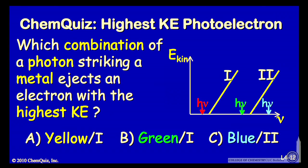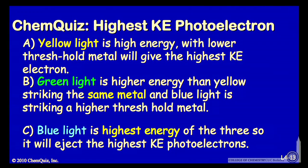What is the highest kinetic energy? Let's consider an argument for each of the three answers. Yellow light is high energy with a lower threshold metal, so it'll give the highest kinetic energy electron.